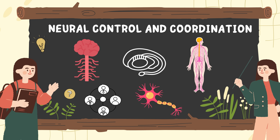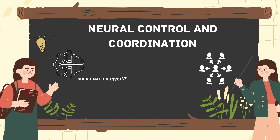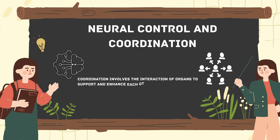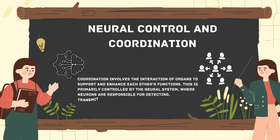Starting with introduction: what is neural control and coordination? Coordination involves the interaction of organs to support and enhance each other's functions. This is primarily controlled by the neural system, where neurons are responsible for detecting, transmitting, and receiving impulses.